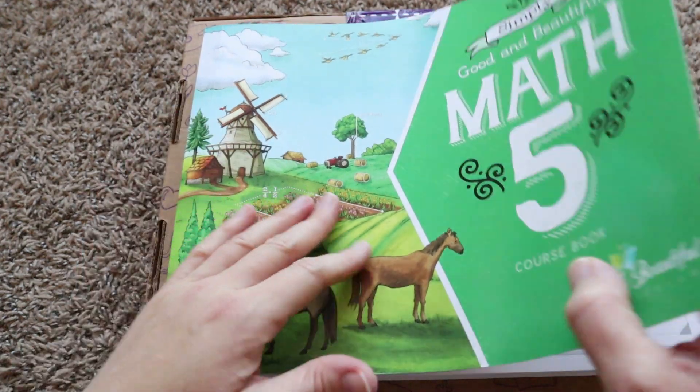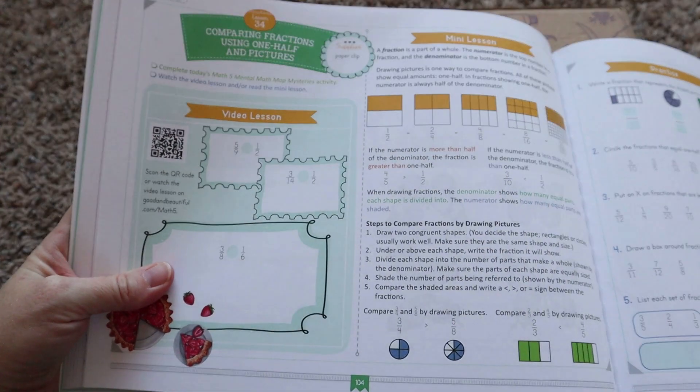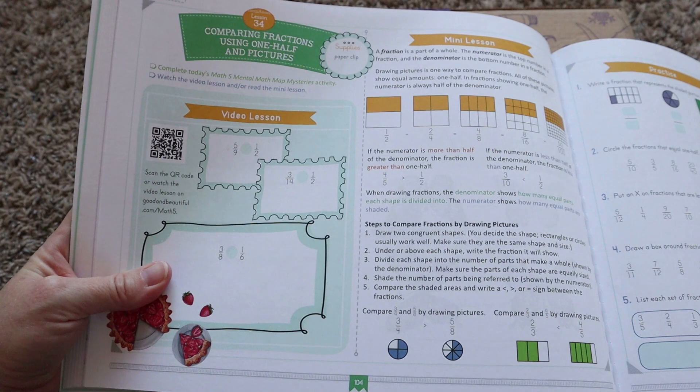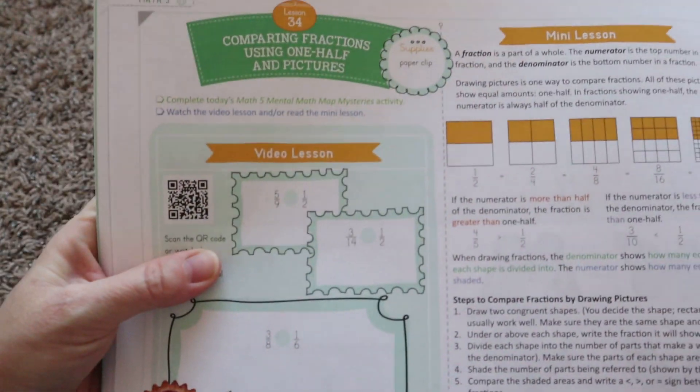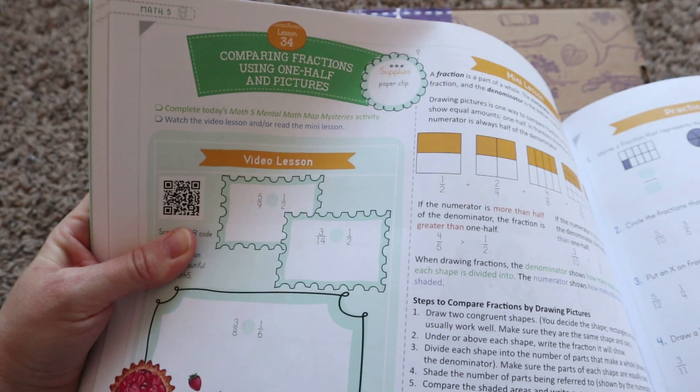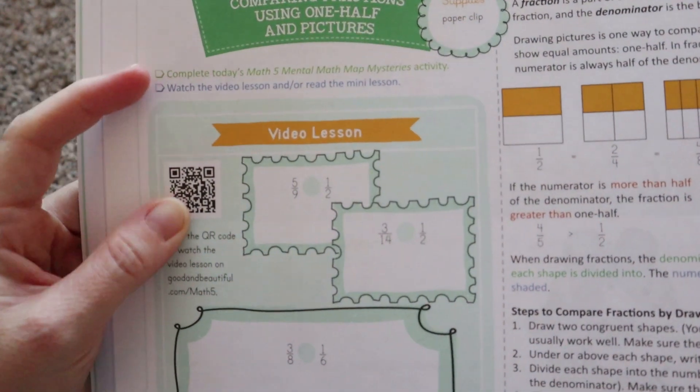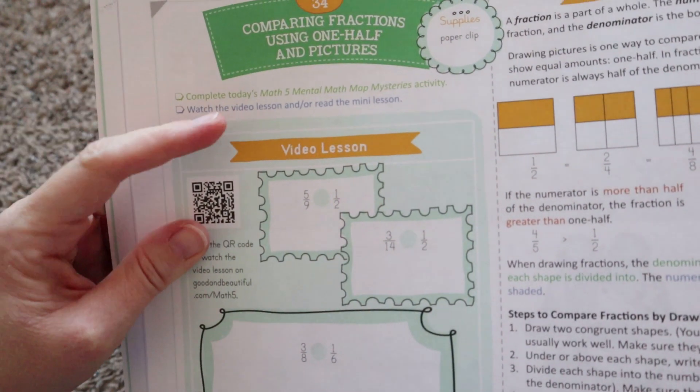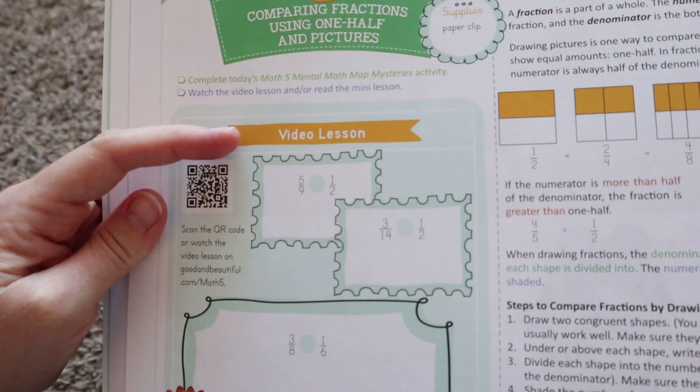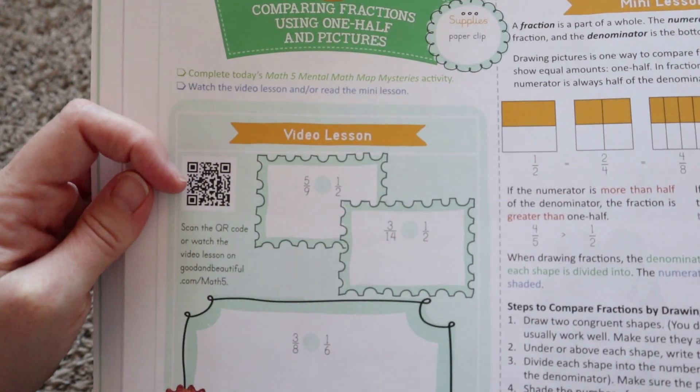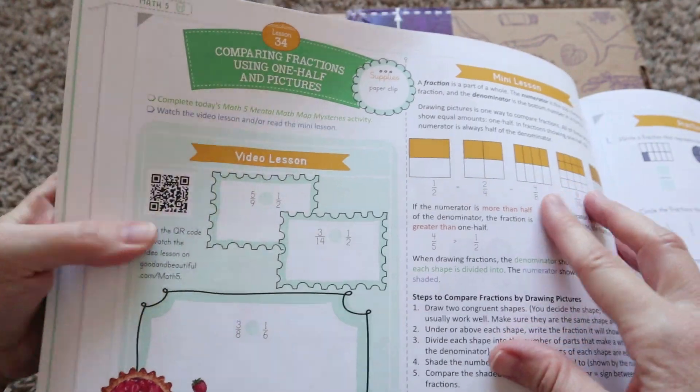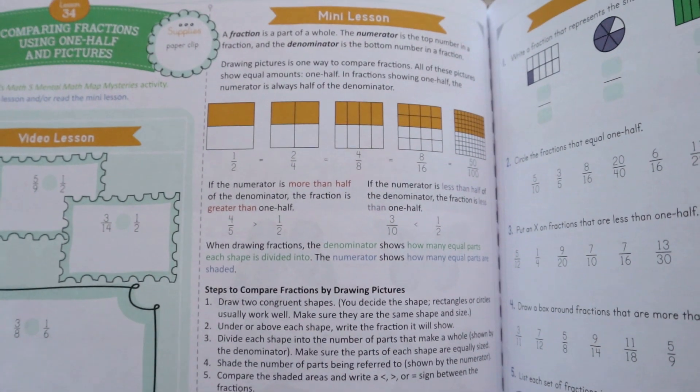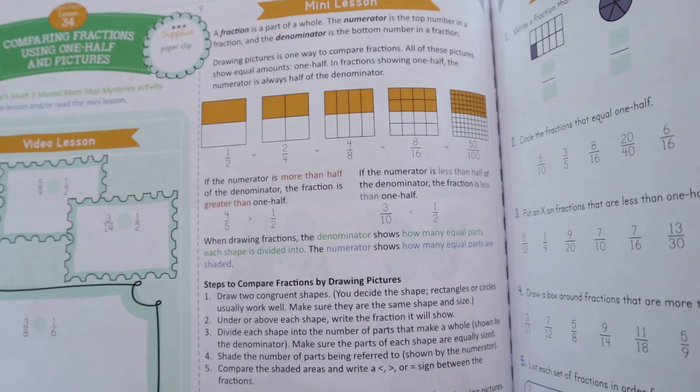All right so I just wanted to walk you guys through what a lesson looks like so you can really get a feel for it. I know I just did a whole flip through of the book but I had one subscriber who asked for actual lesson walkthroughs and I think that that was a great idea so I decided to include them in some of my reviews. So this is lesson 34 hopefully you guys can see that well and so you are going to complete today's mental math map mysteries activity and then watch the video lesson or read the mini lesson. So if you choose to do the video lesson with your child they can scan this QR code and then they can follow the video to figure out how to solve these or they can complete this mini lesson right here and go through it themselves.